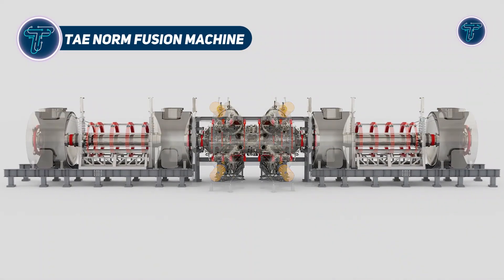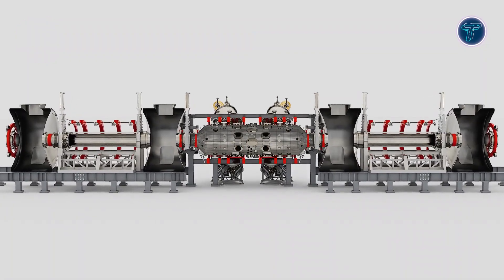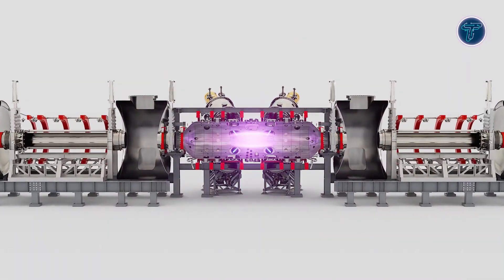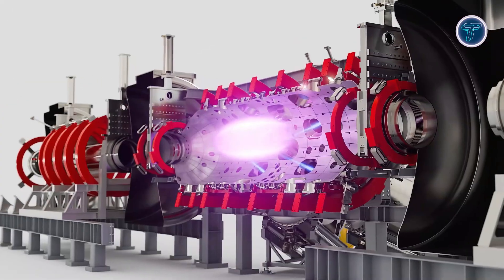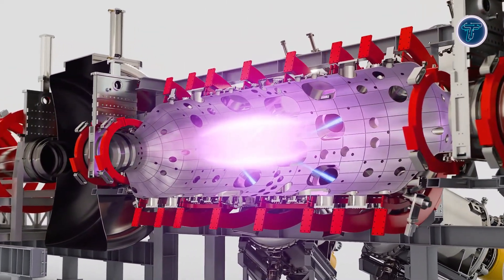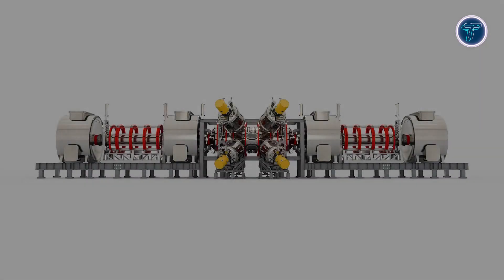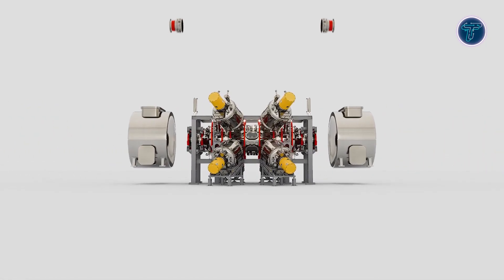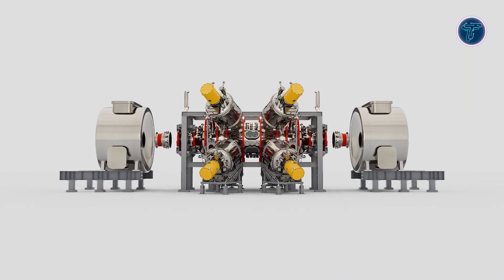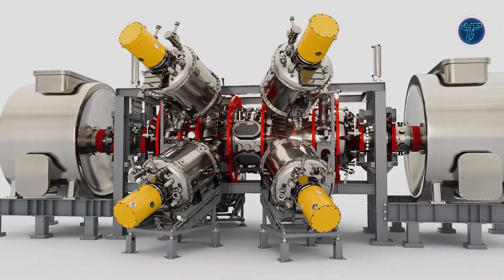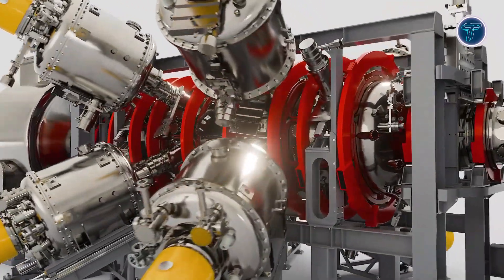TAE Norm Fusion Machine. TAE Technology's Norm Machine showcases a bold step forward in fusion development by using a simplified, neutral beam-only system to create and sustain high-energy plasma. Instead of relying on complex plasma formation hardware, Norm forms its plasma directly through powerful neutral particle beams, cutting overall size and mechanical complexity almost in half compared to earlier designs. This leaner architecture allows the field-reversed configuration setup to operate more efficiently, with the plasma generating much of its own magnetic structure. Norm has already produced TAE's most consistent high-performance plasma results, demonstrating longer stability and better control through real-time feedback systems.